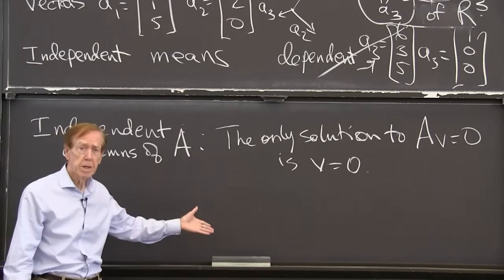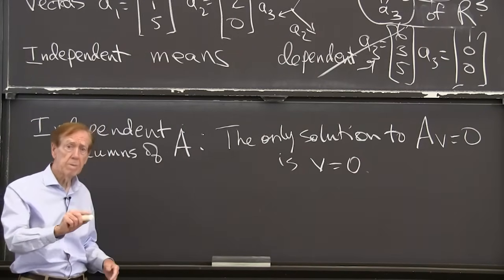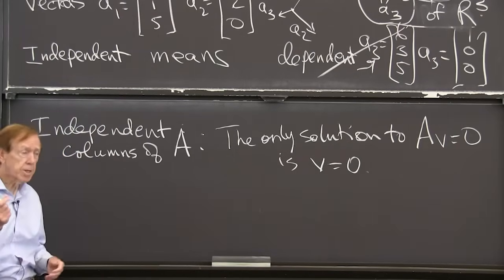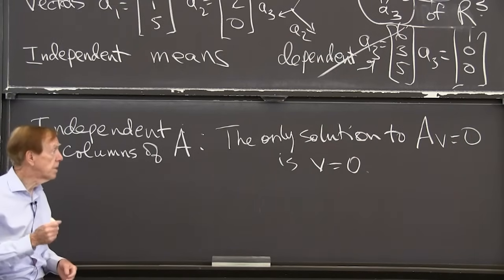So if I have independent columns, then I haven't got any null space. If I have independent columns, then the null space of the matrix is just the 0 vector, is the 0 vector.